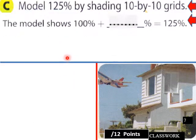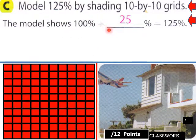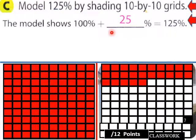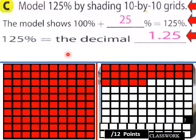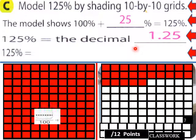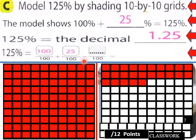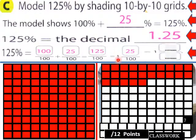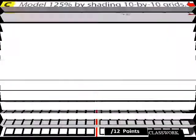Model 125% by shading 10 by 10 grids. The model shows 100% plus 25% equals 125%. So 125% equals the decimal 1.25. 125% equals 100 over 100 plus 25 over 100, so that would equal 125 over 100, or 1.25, or 1 and 1/4 is what these grids would represent.